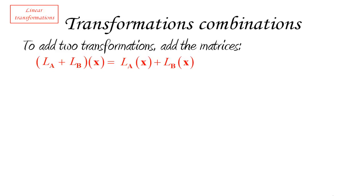Notice that this implies that, first of all, both LA and LB have to be able to transform the same kind of vectors, since we're using the same vector to begin with, and then they have to provide a vector of the same size or we will not be able to add up the two images.